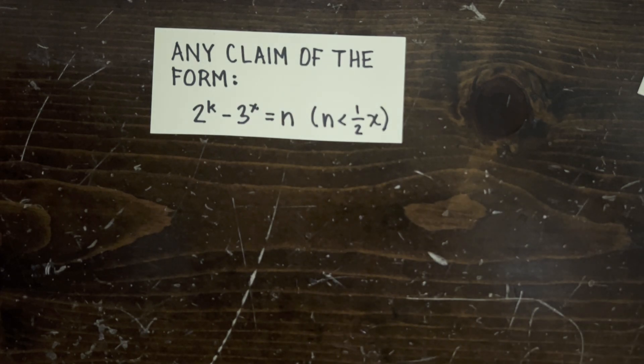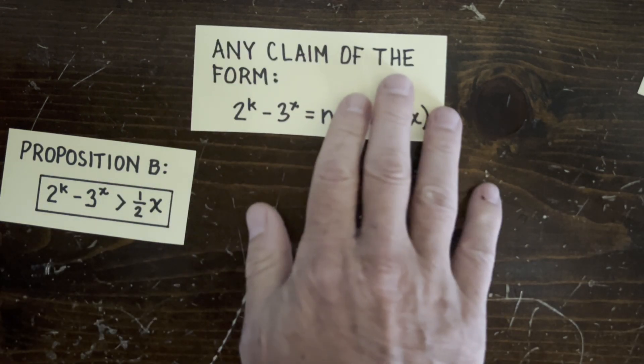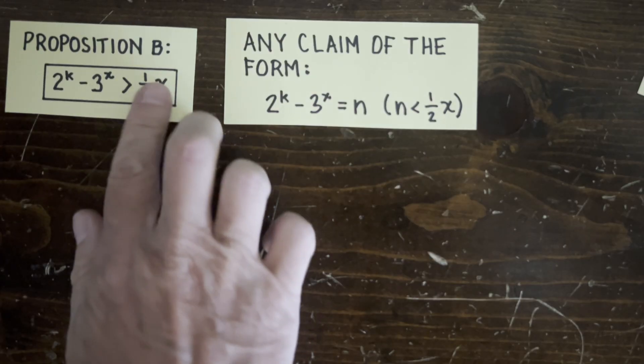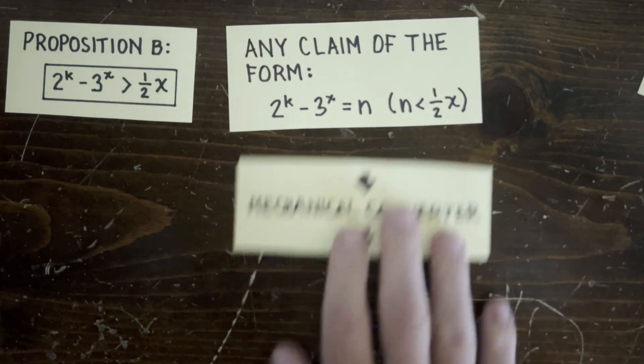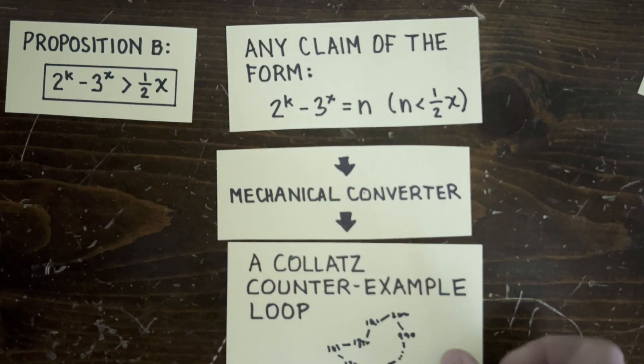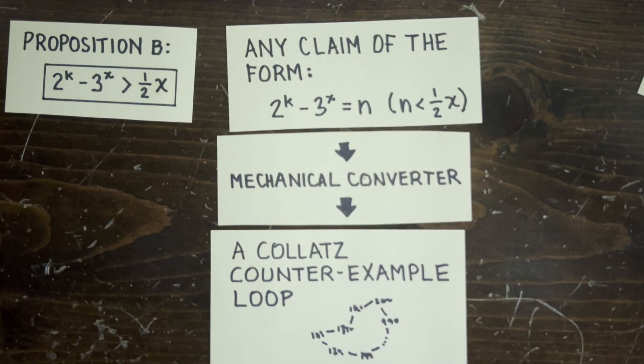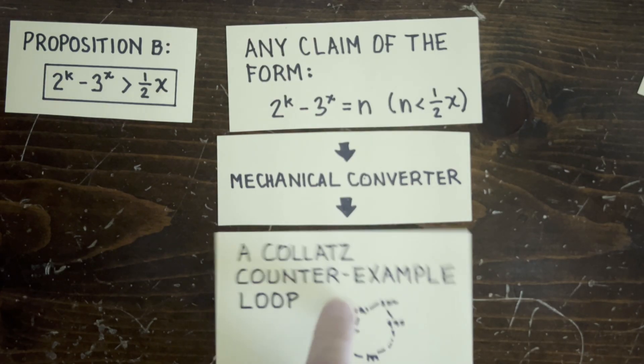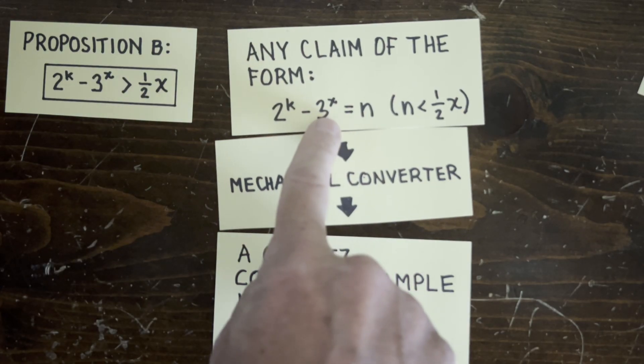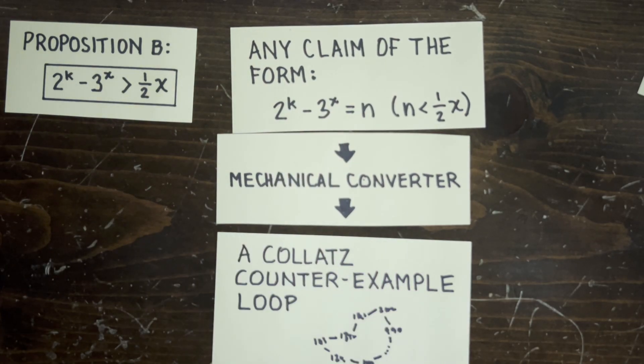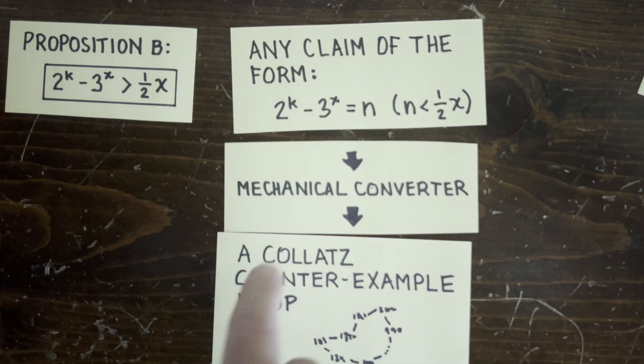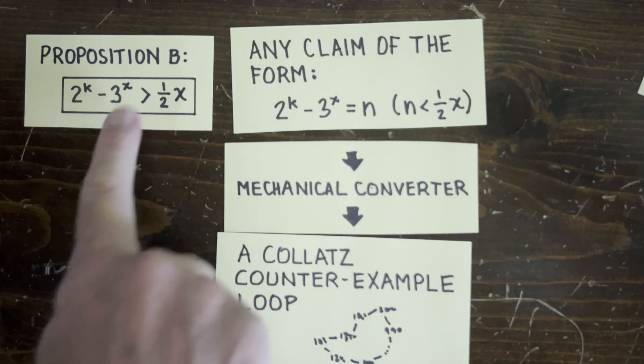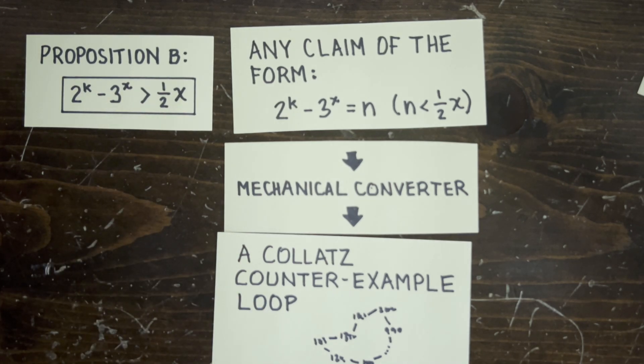Okay, first, suppose you prove the Collatz conjecture. Now, Tao takes any claim of the form 2 to the k minus 3 to the x equals n, where n is less than a half x. And for any such claim, he mechanically converts it into a Collatz counterexample loop. But, since you've proved the Collatz conjecture, no such counterexample loop can exist. Therefore, by contradiction, this claim here must be false. And Tao's conversion method not only refutes this claim, but also every claim like it, which establishes the truth of Proposition B as a side effect of your Collatz conjecture proof.